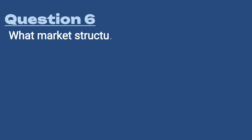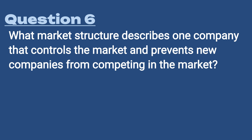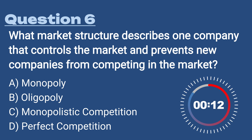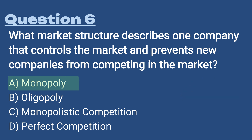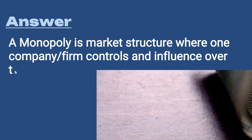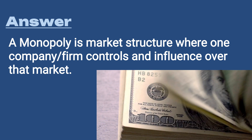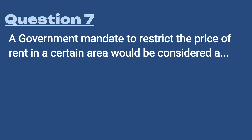Question number six: what market structure describes one company that controls the market and prevents new companies from competing? A) Monopoly, B) Oligopoly, C) Monopolistic competition, D) Perfect competition. The answer is A, monopoly — a market structure where one company controls and influences the entire market. They have price controls and no competition. In the United States, if you're determined to be a monopoly, the government can break up your company.